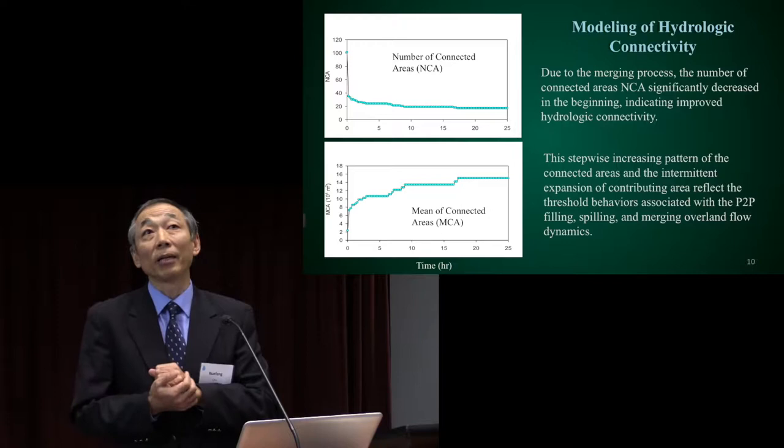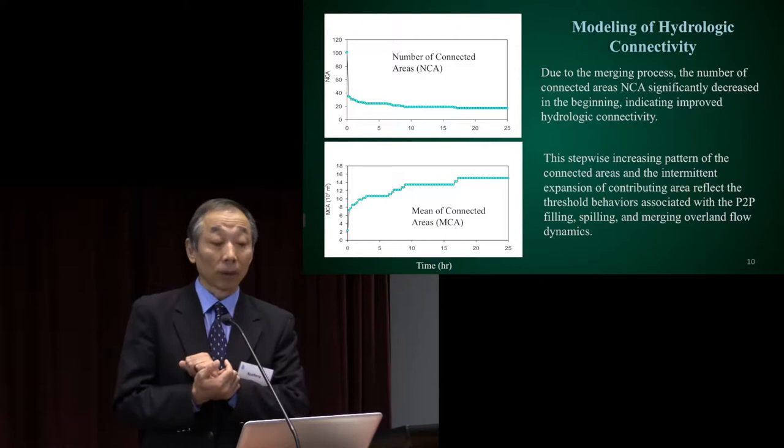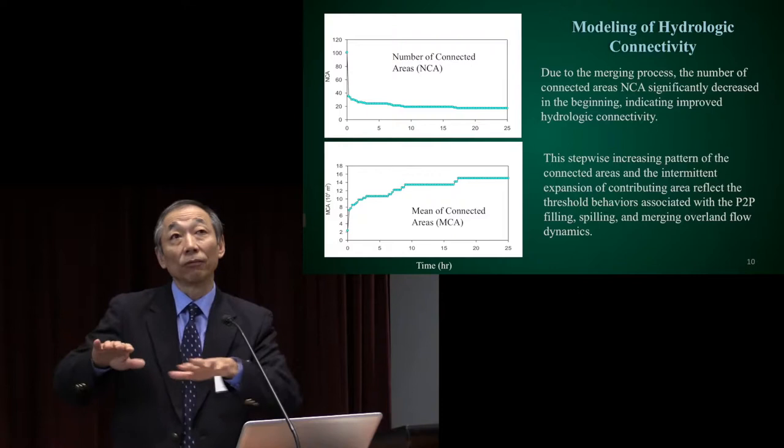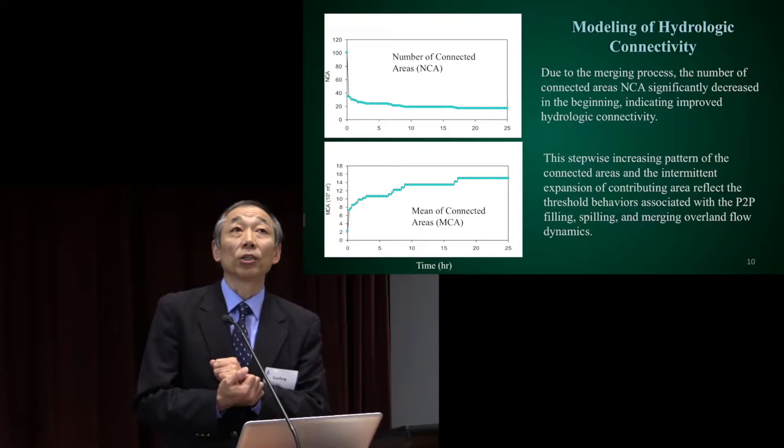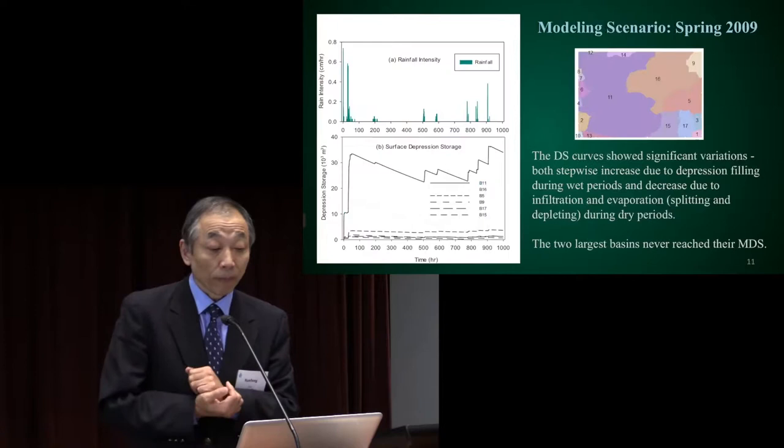The next topic I want to highlight is hydrologic connectivity. At the very beginning there are many isolated, localized systems. During the process, the connected area gradually increases while the number of isolated systems decreases — you can see the evolution of contributing area. I also want to highlight threshold control and the stepwise change: from the lower figure you can see a stepwise change because of threshold control.